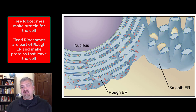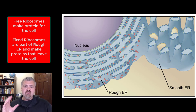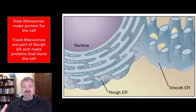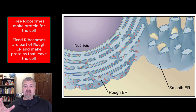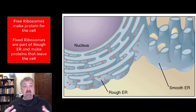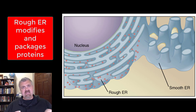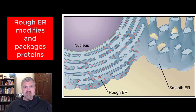So DNA becomes RNA in the nucleus, and that messenger RNA goes and finds a ribosome. The rough ER is studded — bedazzled — with ribosomes, and when they make a protein, it's going to be in its primary structure, which means it's just a sequence of amino acids. When it enters the rough ER, it's going to be modified and packaged so it reaches its secondary or tertiary structure — important basic biochemistry terms. So the rough ER modifies and packages these proteins.